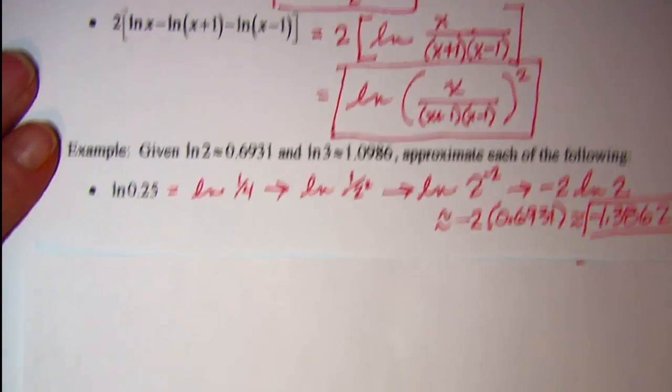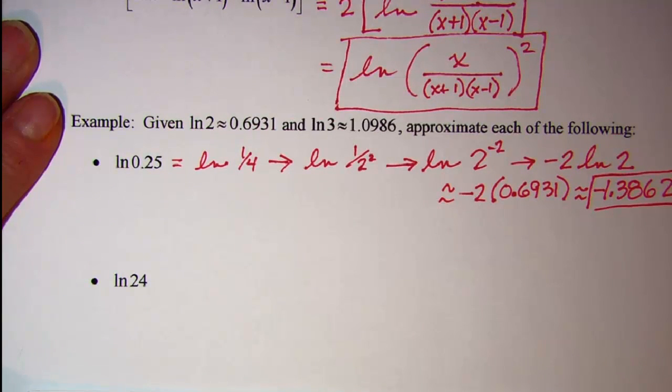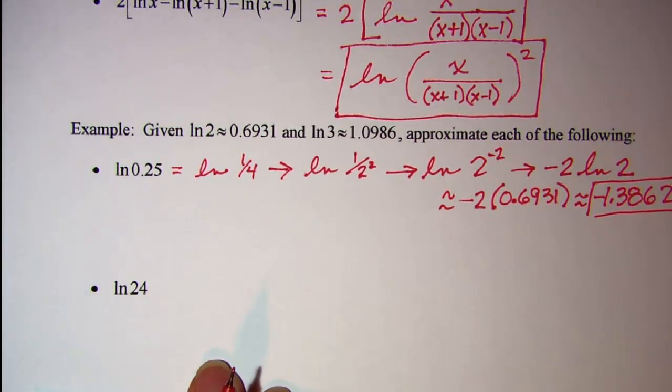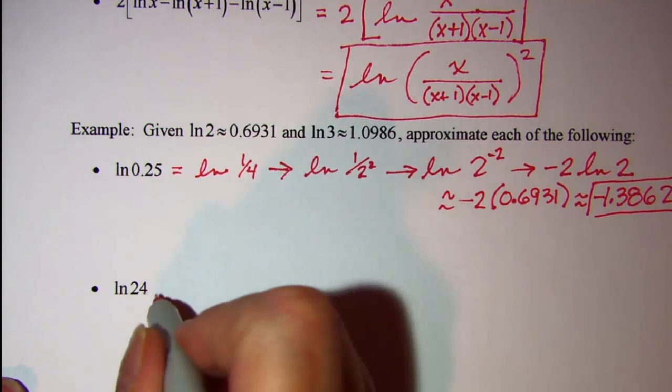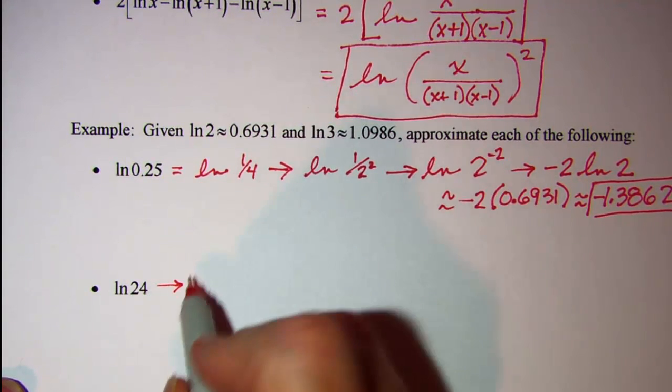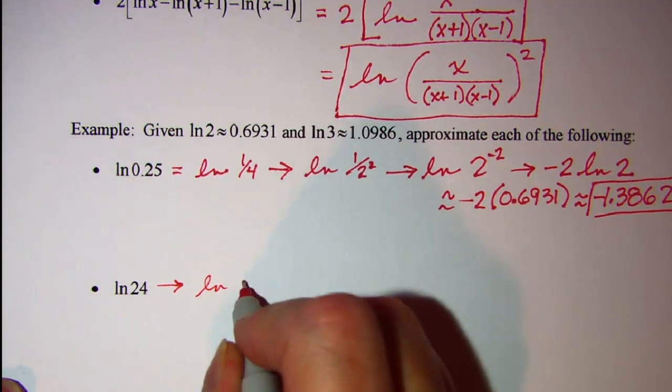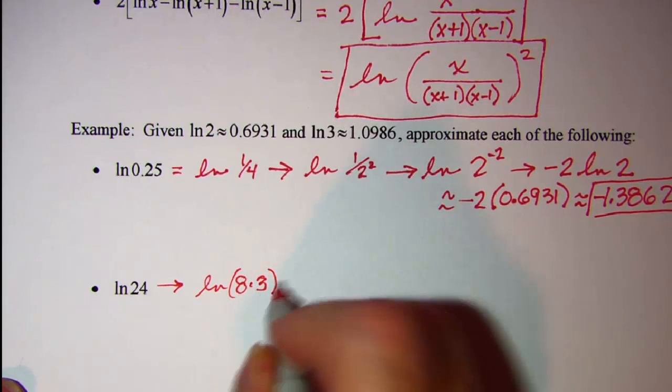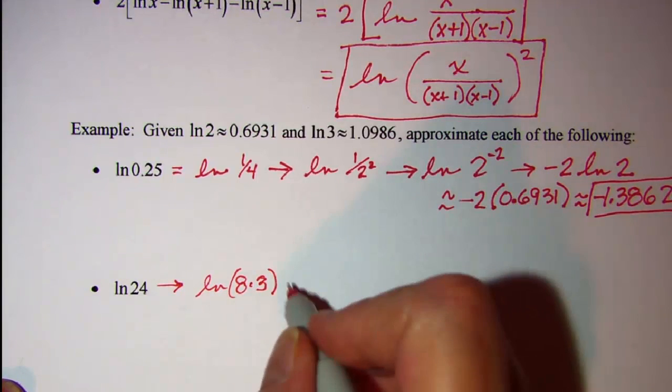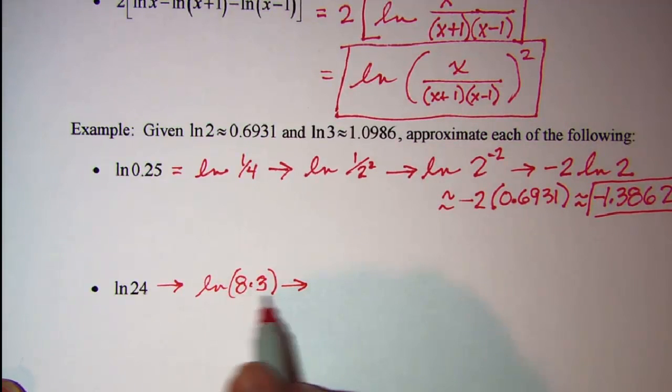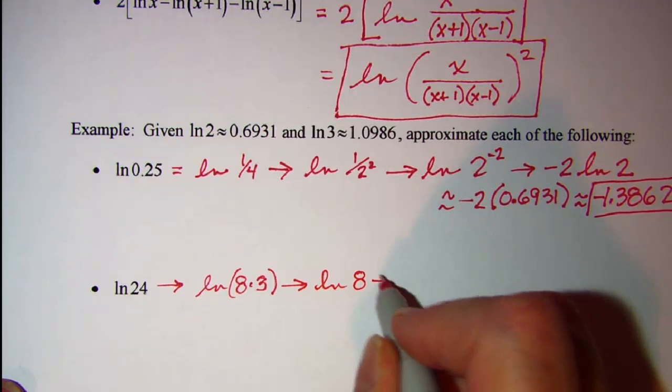Let's do one more of those. This argument is a whole number, but we can think of it as a product of some numbers. Remember that we need to only use 2's and 3's. So 24 is 8 times 3. And then we know that once we have our argument is a product, we can write it as the sum of the individual logarithms. So this is ln 8 plus ln 3.